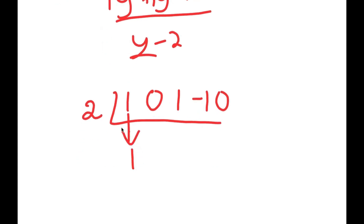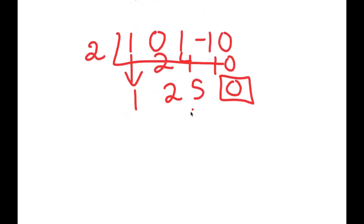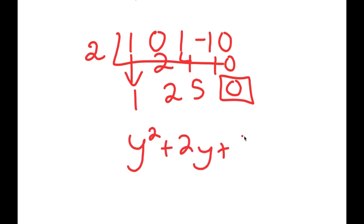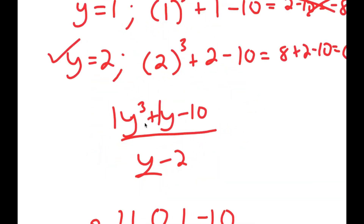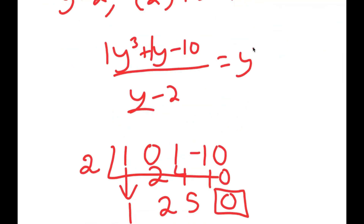To perform the synthetic division, I drop down 1. 2 times 1 is 2, so I put 2 here. 0 plus 2 is 2. 2 times 2 is 4. 1 plus 4 is 5. 2 times 5 is 10. Negative 10 plus 10 is 0, so I get a remainder of 0. The coefficients are 1, 2, 5, giving me y squared plus 2y plus 5. So y to the power of 3 plus y minus 10 divided by y minus 2 equals y squared plus 2y plus 5.